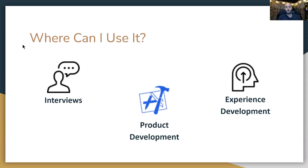Where can you use this? Anywhere you need a systematic approach to thinking through something. But most commonly, the three areas are: interviews — it's really helpful for outlining impact from projects you've worked on. It's also helpful if you're interviewing for big tech in the PM world, like Google, Facebook, Microsoft. They're really fond of asking product design questions, product execution questions, and metrics questions. This is a really effective way to structure those responses to really nebulous, high-level questions like 'How would you improve Facebook?' or 'What should Microsoft focus on next?'